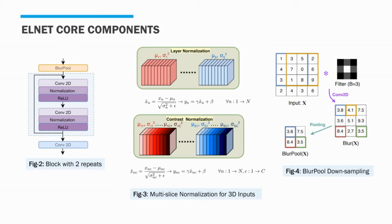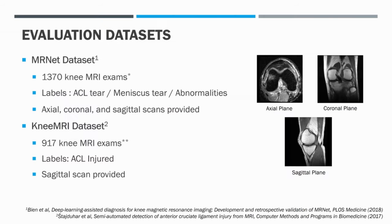These core components make up LNET. Next, we evaluate LNET on two publicly available knee MRI datasets. The first is the MRNet dataset. Each exam is given three independent binary labels according to whether ACL tear, meniscus tear, or other abnormalities exist in the knee. In addition, three imaging modalities — the axial, coronal, and sagittal scans — are given for each knee.